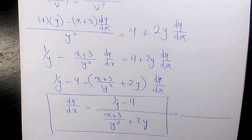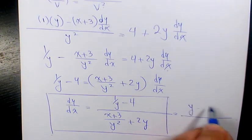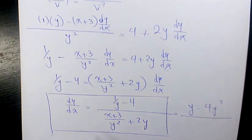It's going to be (y - 4y^2) over (x+3 + 2y^3). That's the final answer.